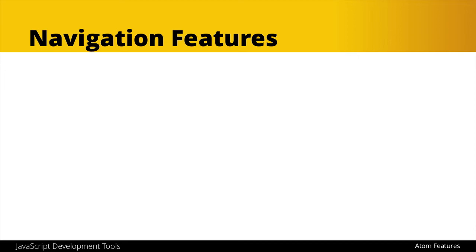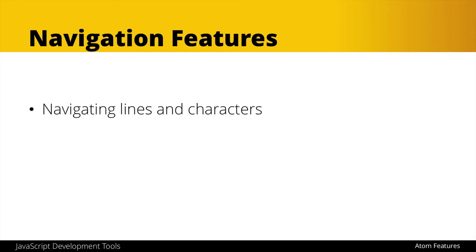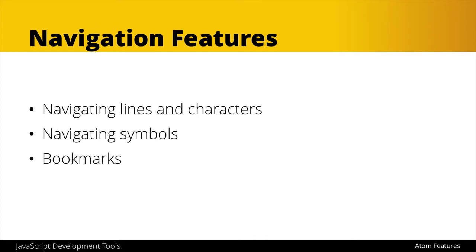After keyboard shortcuts, our navigation features are the next major ones we want to look at. These are going to involve navigating through lines and characters of code, navigating through symbols like methods, working with bookmarks, and being able to toggle the sidebar to get a little bit more view of your code. Some of these you may already know, but let's take the time to go through each one in Atom.